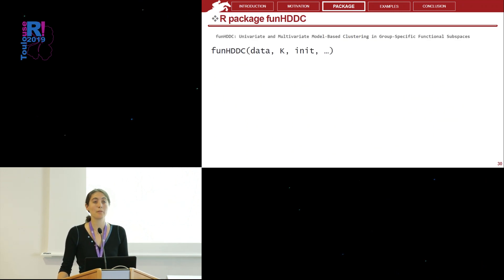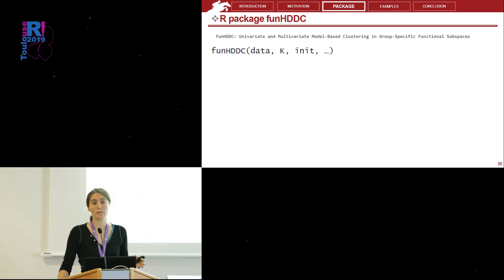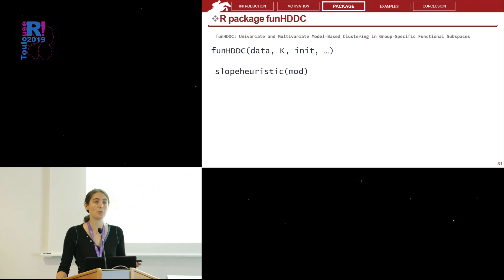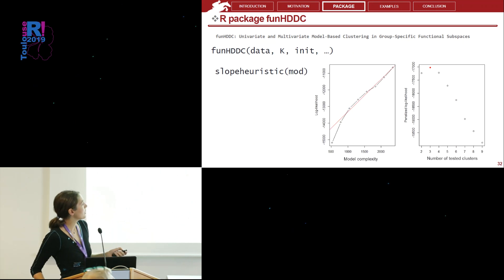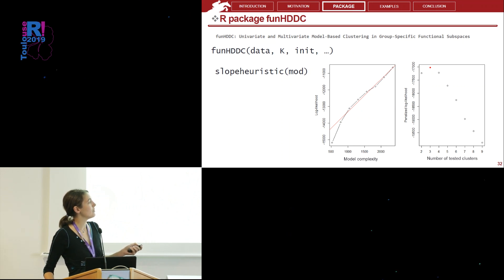Our package has five functions to perform all these calculations. The main function takes as input the data — univariate or multivariate — k the number of clusters, and the initialization type of the algorithm. It provides clustering results and also the BIC criterion for model selection. We also provide a second function for model selection called the slopeHeuristic function, which plots model complexity against log likelihood. A robust linear regression line is fitted, and its coefficient is used to penalize the log likelihood. We then select the number of clusters that maximize this penalized log likelihood.